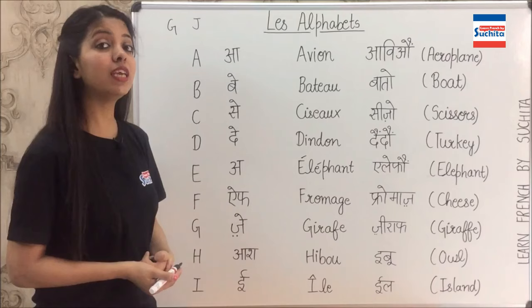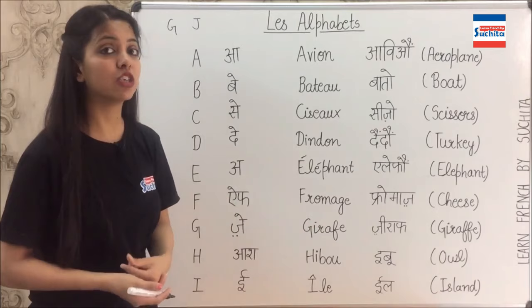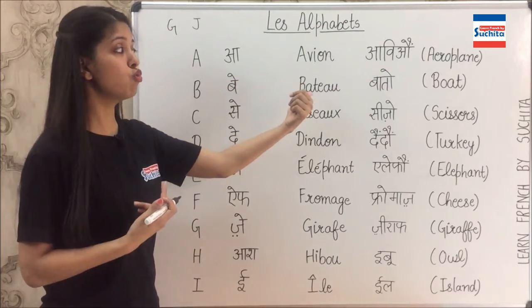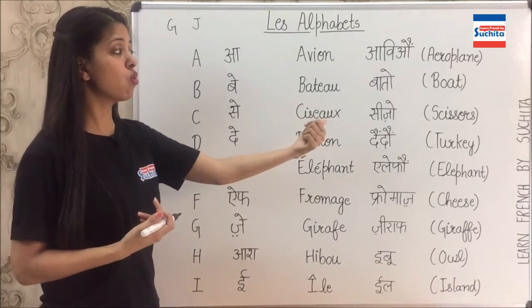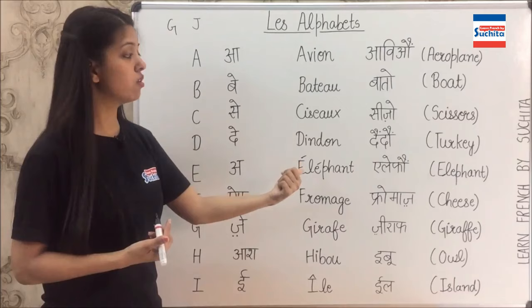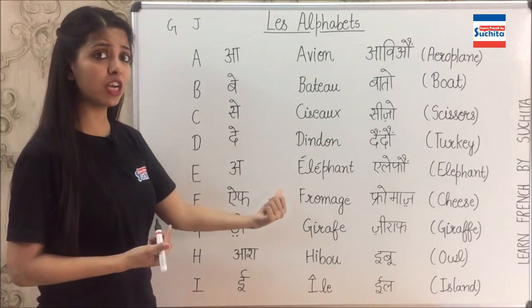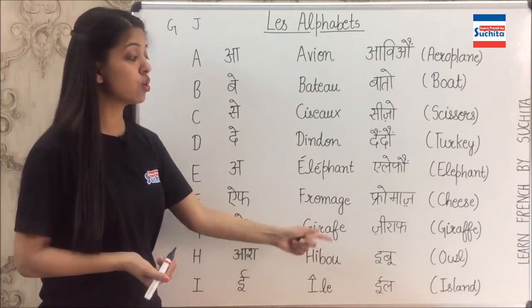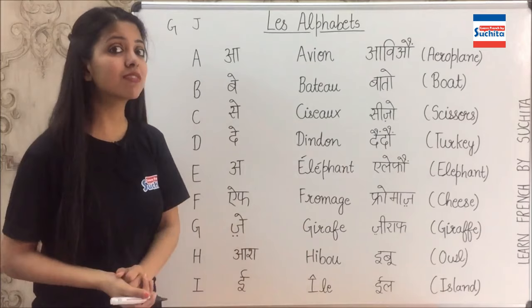The next is I — île. The pronunciation is île, which means an island. On les répète — repeat after me: A, avion, aeroplane. B, bateau, boat. C, ciseau, scissors. D, dindon, turkey. E, éléphant, elephant. F, fromage, cheese. G, girafe, giraffe. H, hibou, owl. I, île, island.